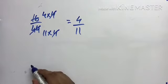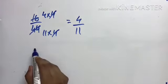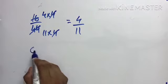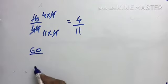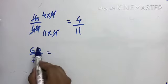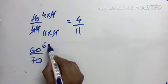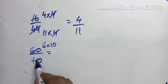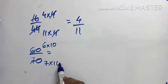This is 6 times 10 is 60. This is 7 times 10 is 70.